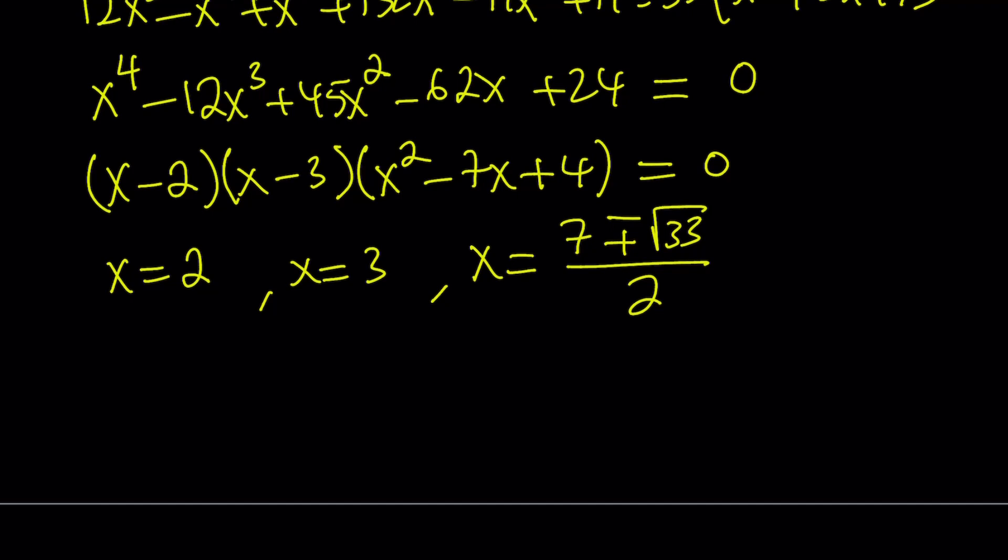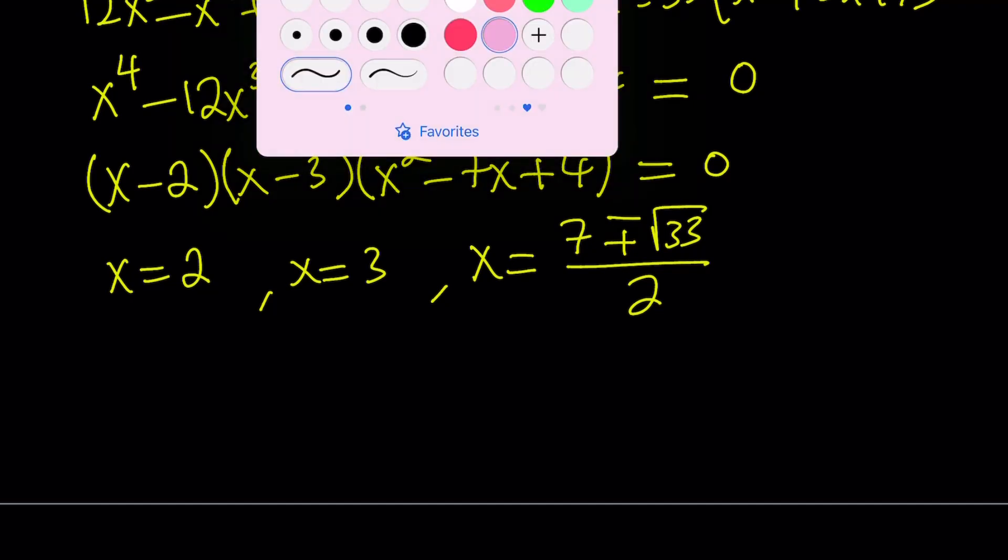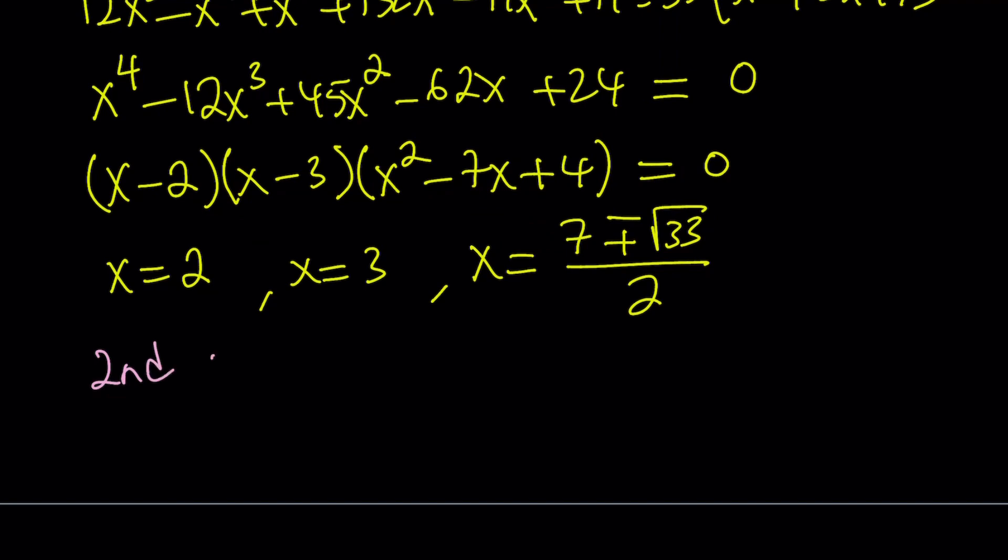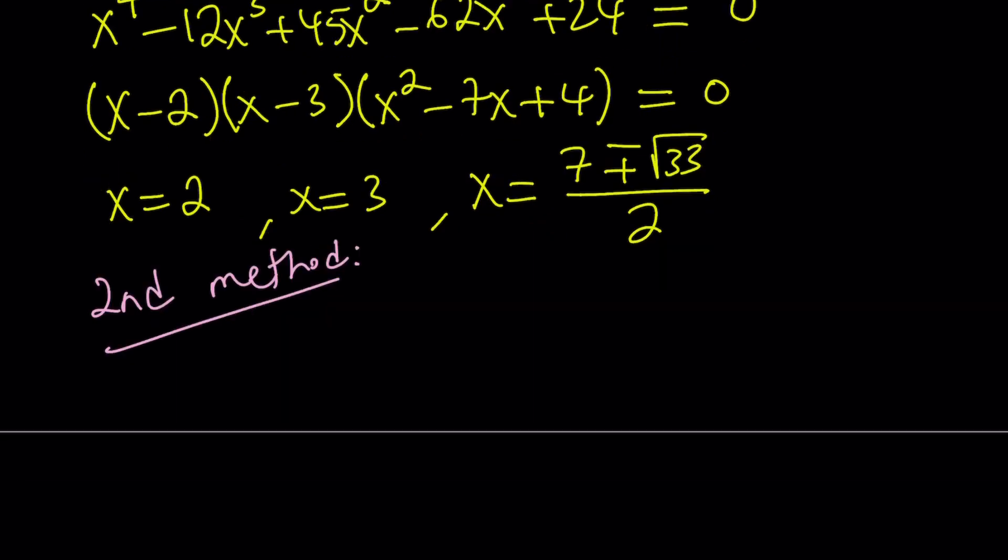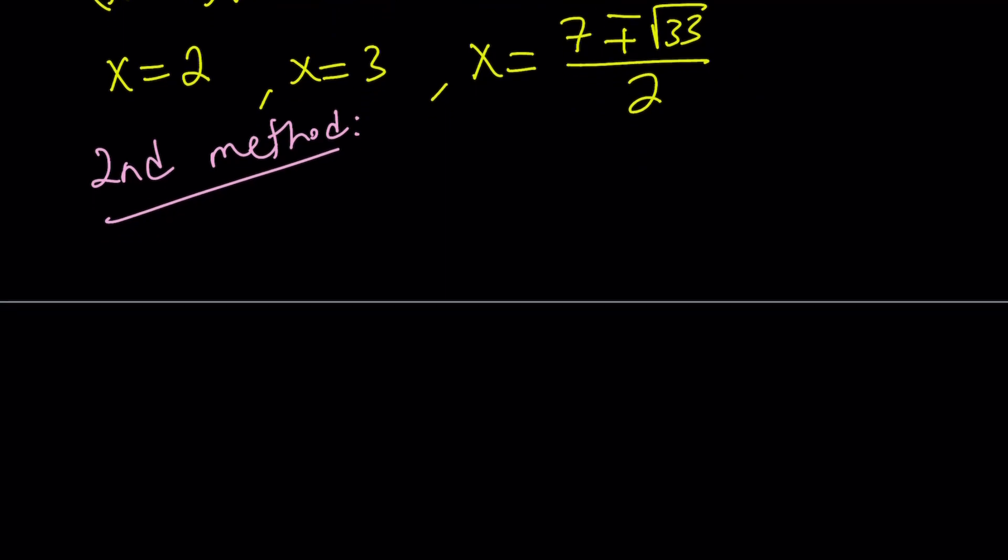Make sense? Hopefully, it does. Let's go ahead and talk about the second method now. So my second method involves a different approach. Let's go ahead and distribute the first equation. Remember, our first equation was (x+1)(y+1) = 12. And the second equation was (x+y) multiplied by (xy+1) = 35.